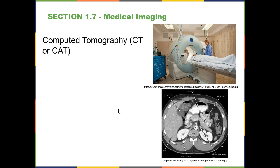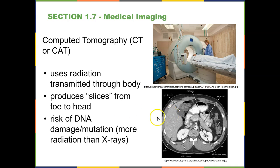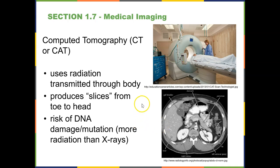Next is CT, otherwise known as a CAT scan or computed tomography. CT uses a high level of radiation transmitted through your body. The table slides the patient in and out through a donut-shaped machine, and you can obtain transverse slices from head to toe. As with x-rays, there is a possibility of DNA damage, especially because CAT scans use higher radiation than x-rays. CAT scans are good for looking for free fluid in the body — whether in the head, chest, or abdominal-pelvic cavity — and for looking for tumors or growths that don't belong.